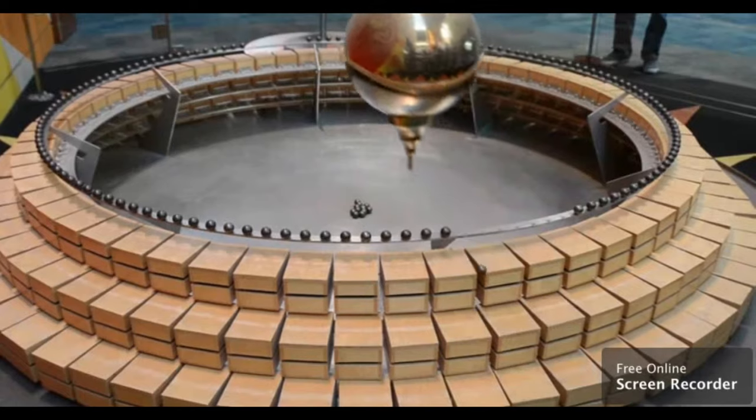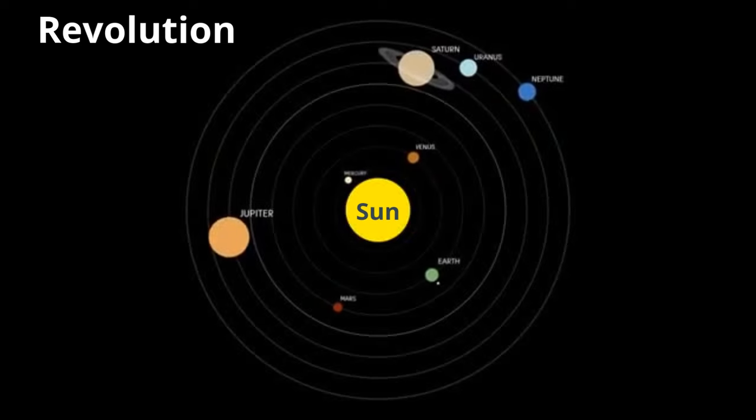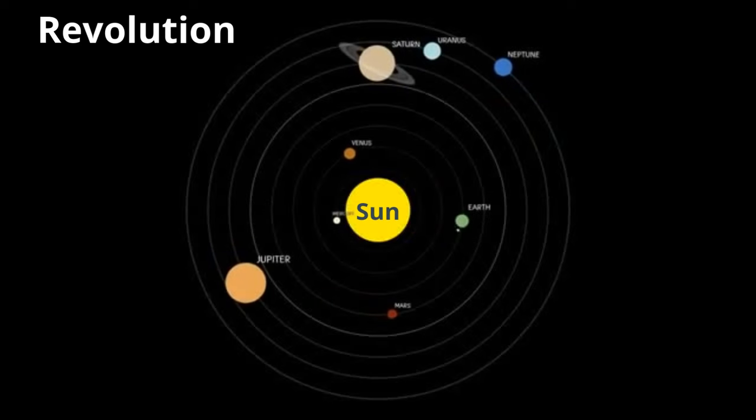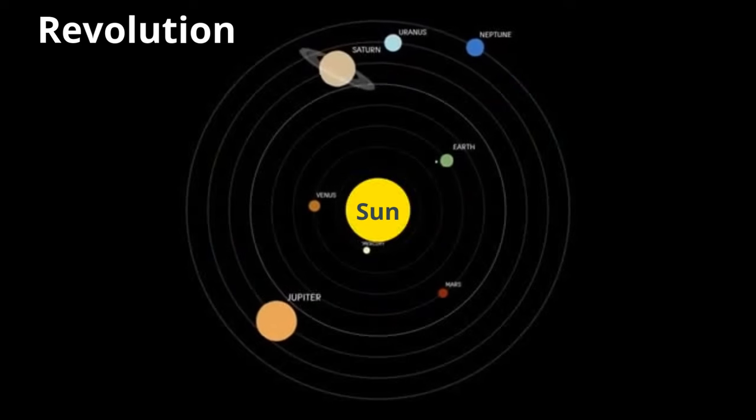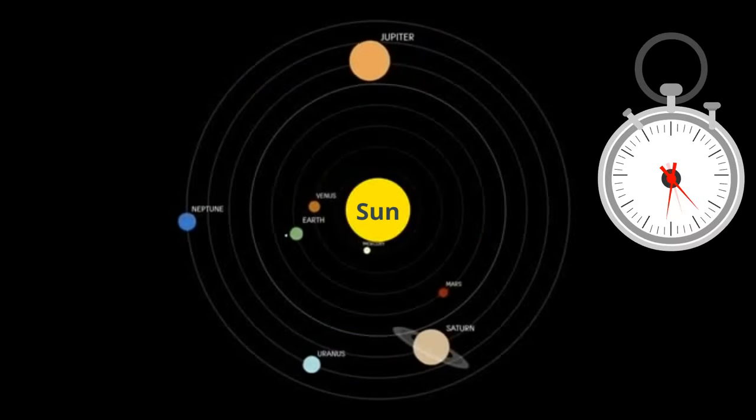The Earth's revolution is the period of time it takes the Earth to go around the sun. It takes two objects in order for a revolution to occur. The Earth revolves around the sun in a counterclockwise direction.